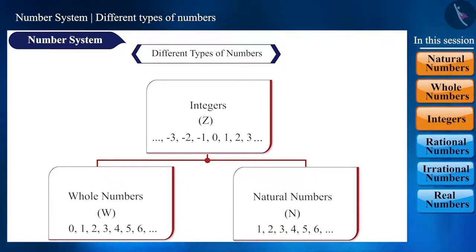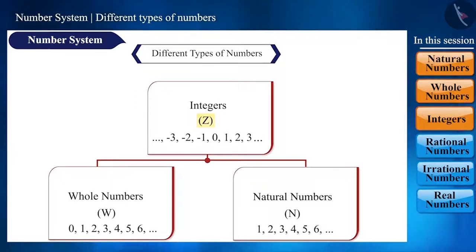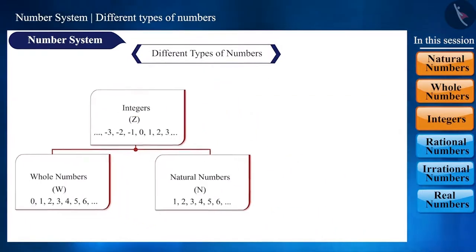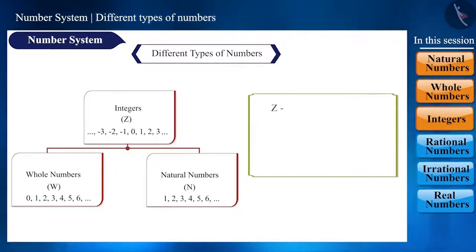Did it not occur to you as to why do we express integers with symbol Z and not with I? Z is derived from the German word which means to count, and Zal, which means number.